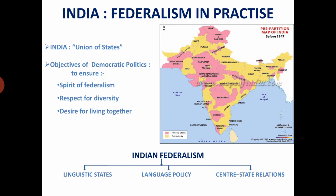During the framing of our constitution, our leaders favoured a strong centre to promote security and integrity of India. Hence, the constitution calls India a union of states instead of a federation. Today, I will talk about the approaches such as linguistic states, language policy and centre-state relations, which helped in strengthening Indian federalism.